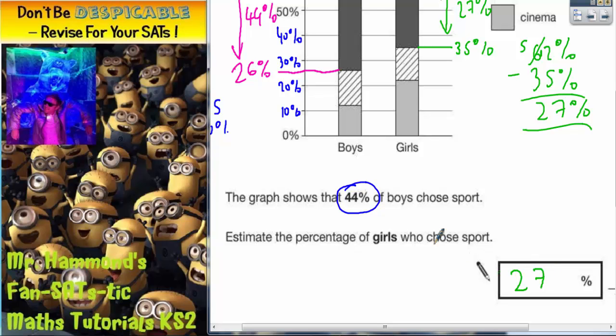At this point, it is worth pointing out that it is an estimate. And in the mark scheme, it does actually say that any answer between 25% to 29% is allowed. So, our estimate of 27% was pretty good. But you could have 25%, 26%, 27%, 28% or 29% as your answer.